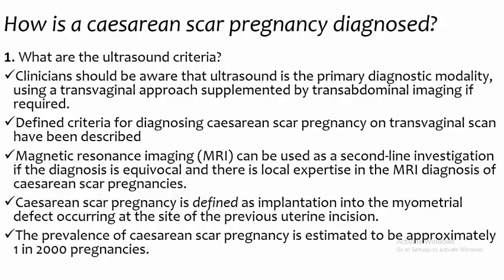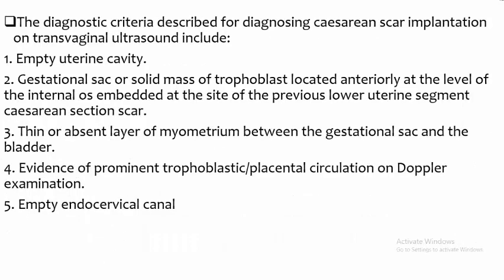Caesarean scar pregnancy is defined as implantation into the myometrial defect occurring at the site of a previous uterine incision. The prevalence is estimated to be approximately 1 in 2,000 pregnancies. The diagnostic criteria on transvaginal ultrasound include: (1) empty uterine cavity; (2) gestational sac or solid mass of trophoblast located anteriorly at the level of the internal os, embedded at the site of the previous lower uterine segment caesarean section scar.